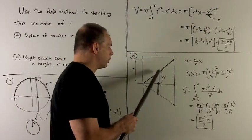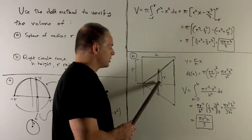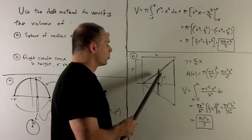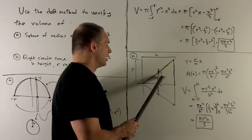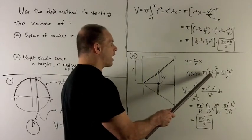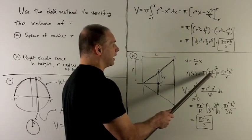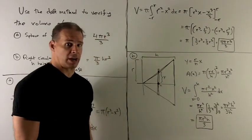Same idea. I pull out the disk at x. Its radius is just going to be the y value, but that's just going to be r over h times x. And the area is then going to be pi times the radius squared. But the radius equals y, so we're looking at pi r squared x squared over h squared.